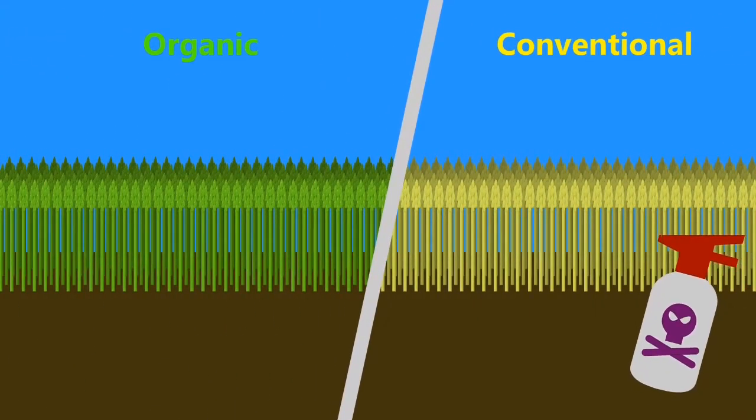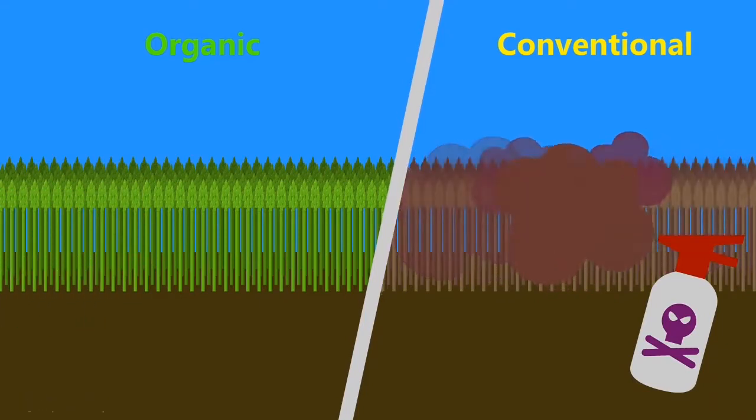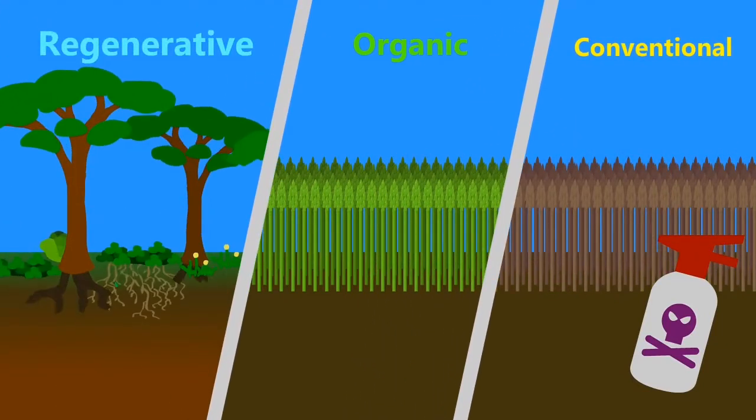Even organic agriculture, while not as bad, still does more harm than good. Regenerative agriculture is a way to reverse this trend to actually make a positive impact on the land.